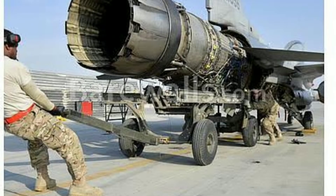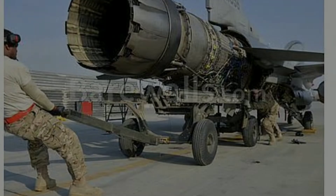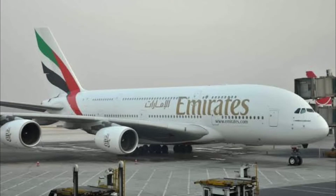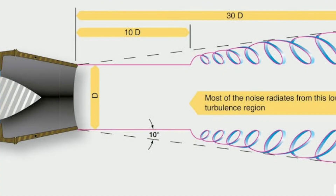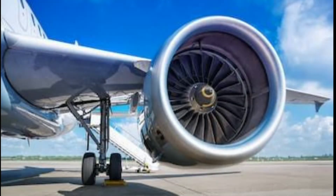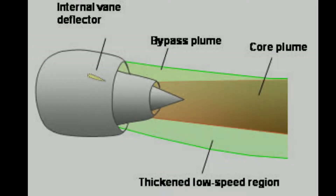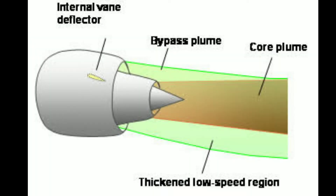However, these engines have very low noise suppression ability, which results in their least use in commercial passenger jets. To fix the problems of noise suppression, manufacturers came up with a new type of gas turbine engine called the turbofan engine. In this engine type, cold bypass air is passed which creates a boundary over the hot gases, thereby lowering the temperature and resulting in the reduction of noise.